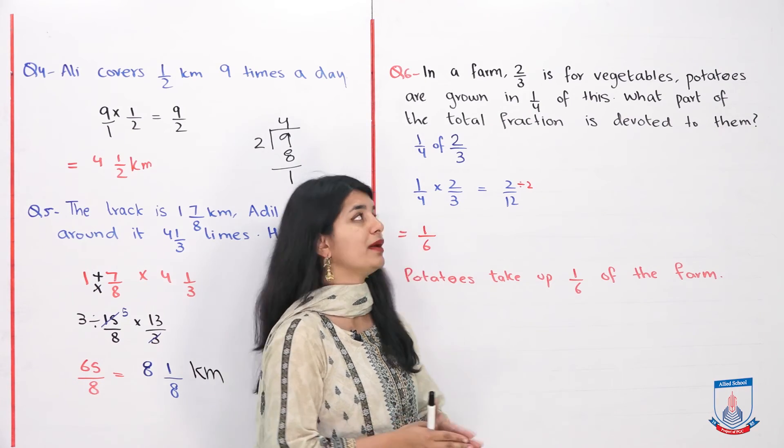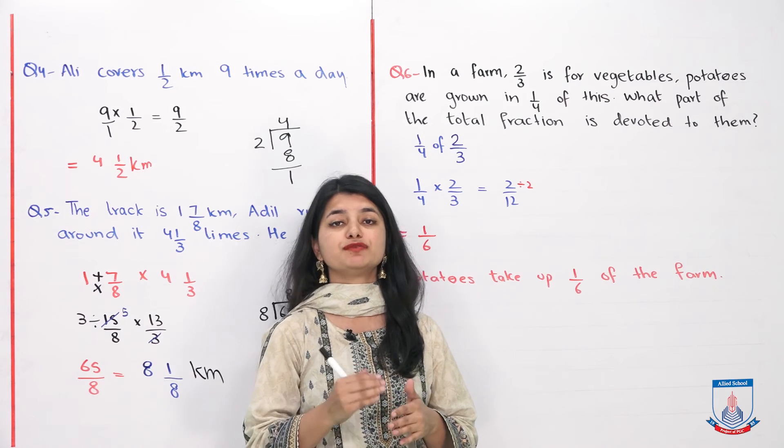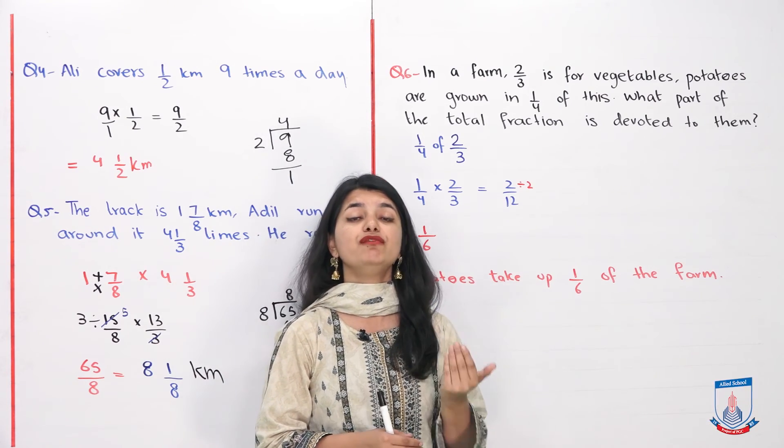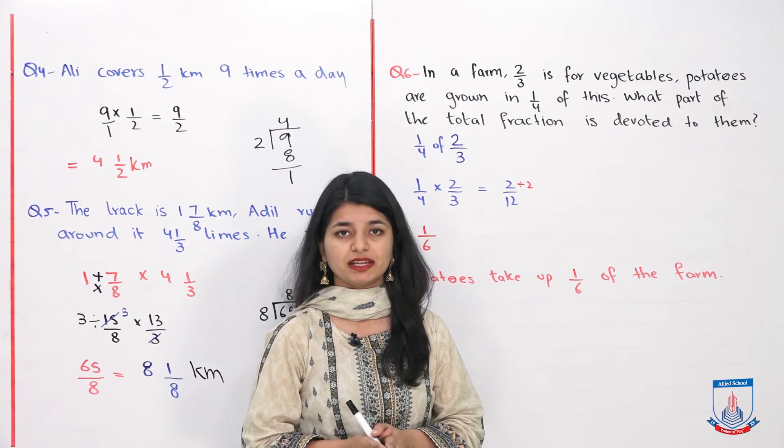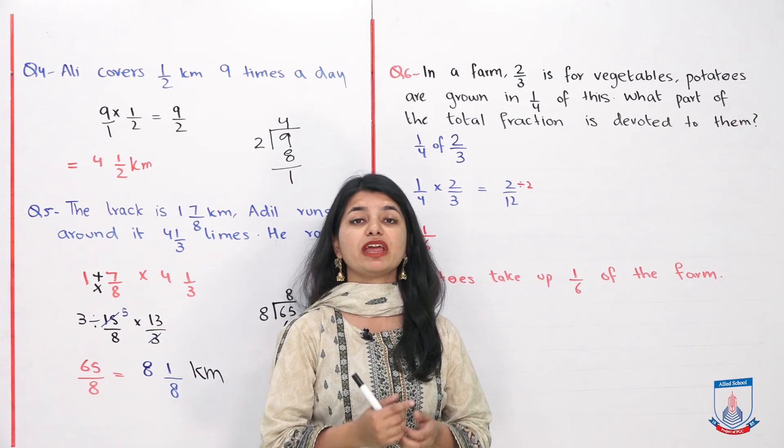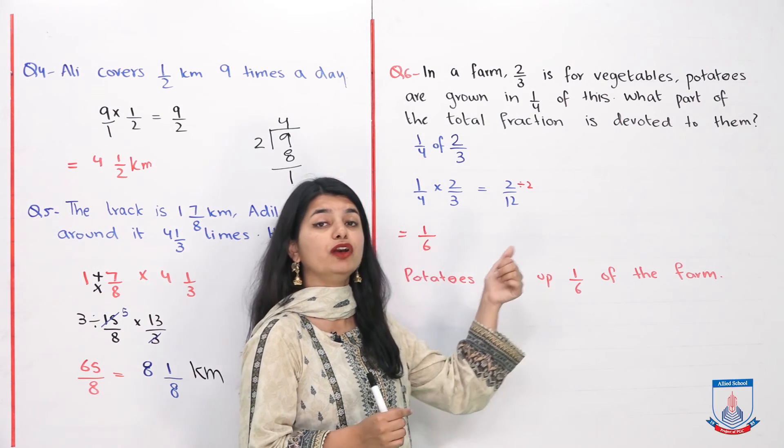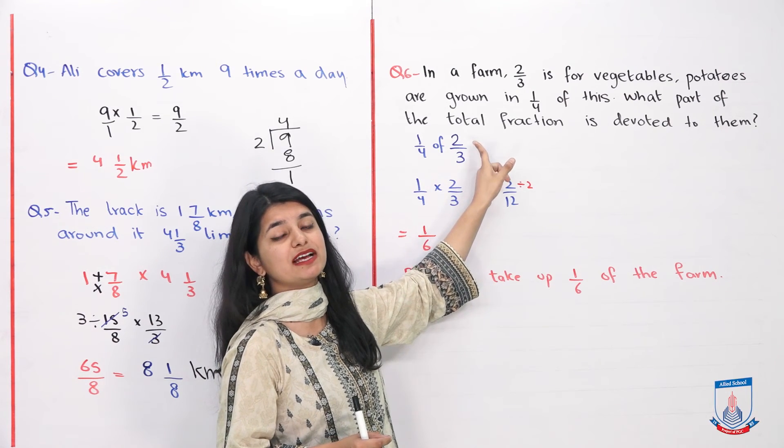Now they are saying that in a farm, 2 over 3 is for vegetables, potatoes are grown in 1 over 4 of them. What part of the total farm is devoted to potatoes? We are saying that the potatoes take up what portion of the total farm?